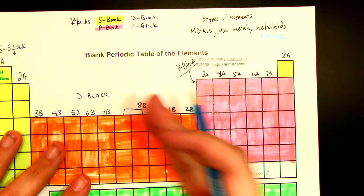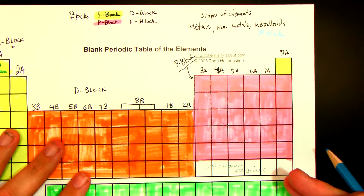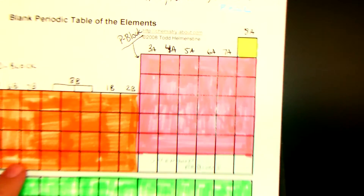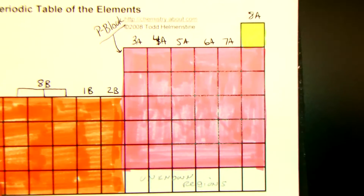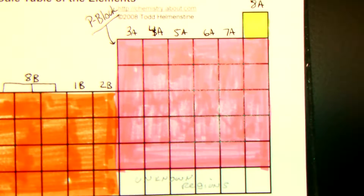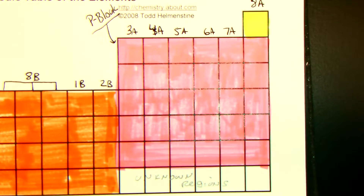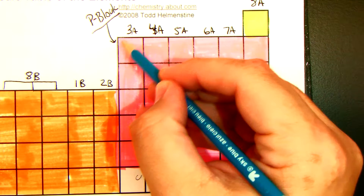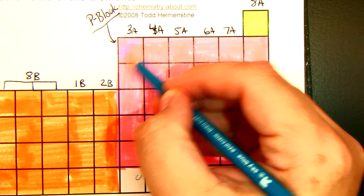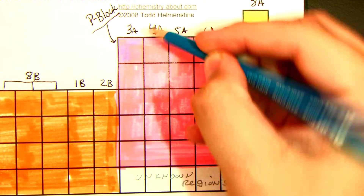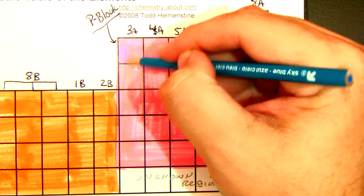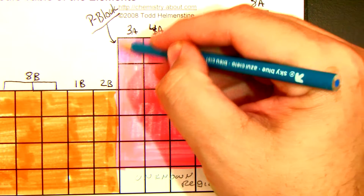The metalloids kind of form a staircase. Let me zoom into the P-block. The first metalloid is going to be in group 3A — it's the first, or top, element in 3A.